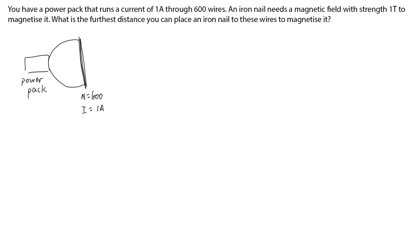You have a power pack that runs a current of 1 amp through 600 loops of wire. What's the furthest distance you can place the iron nail such that it will be magnetized?